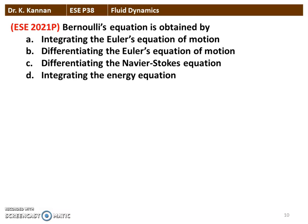The next question is from the 2021 question paper. Bernoulli's equation is obtained by: (a) integrating Euler's equation of motion, (b) differentiating Euler's equation of motion, (c) differentiating Navier-Stokes equation, or (d) integrating the energy equation. The correct answer is integrating Euler's equation of motion — when you integrate Euler's equation of motion for an incompressible fluid, you obtain Bernoulli's equation.